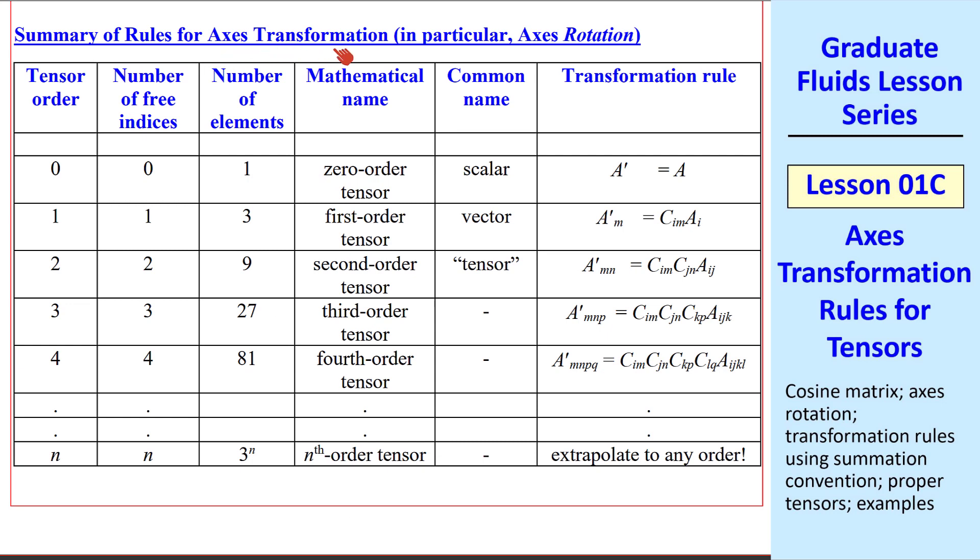Here's a summary of the rules for axes transformation, or axes rotation in particular, for tensors of any order. A tensor of order 0 has only one element. It's a zero-order tensor, which is a scalar. When we transform the axis, nothing changes. So a' = a. For a vector, we have three elements. It's a first-order tensor, which we call a vector. This is the equation I just used: a'_m = c_im a_i.